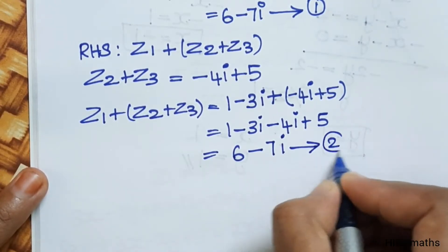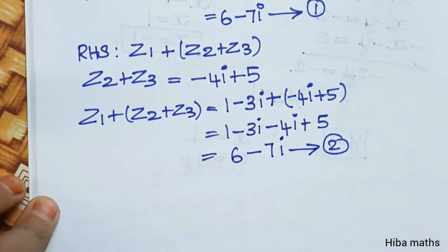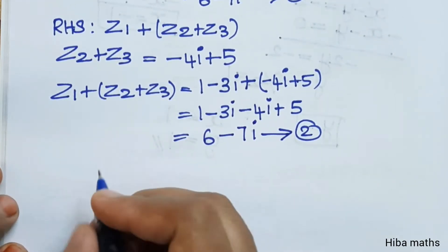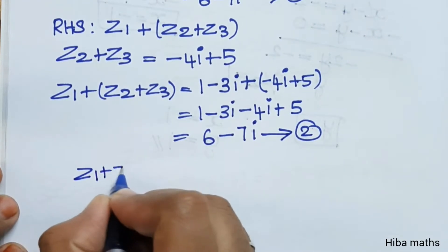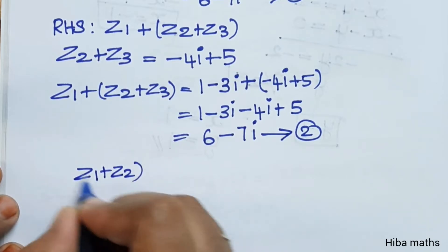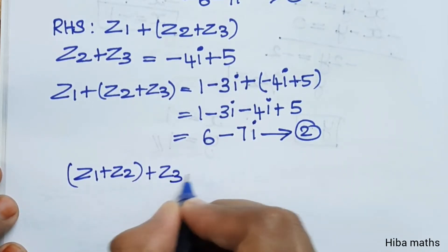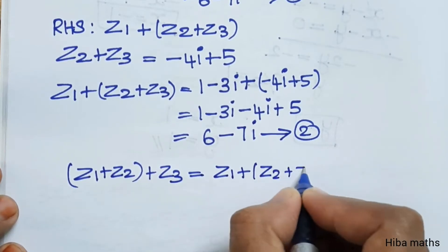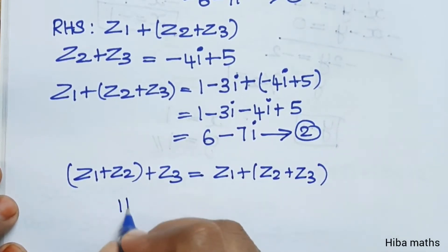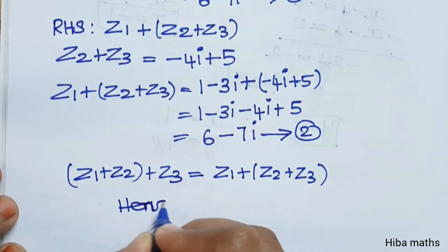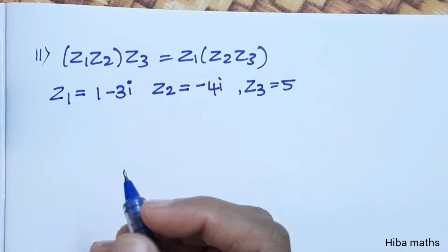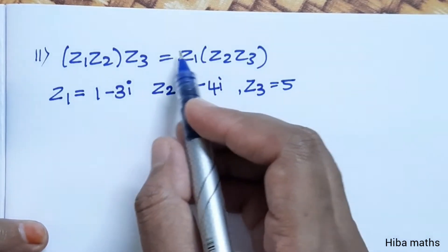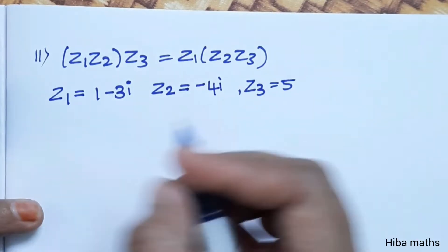Compare the first equation and second equation — both are equal. Therefore z1 plus z2 plus z3 is equal to z1 plus z2 plus z3. Hence proved. Second subdivision: z1 into z2 into z3 is equal to z1 into z2 into z3.